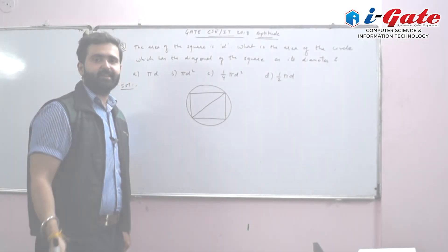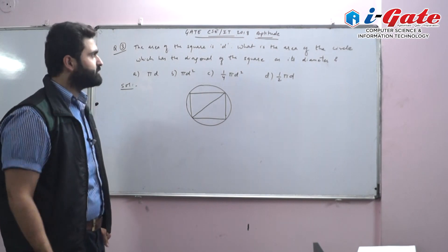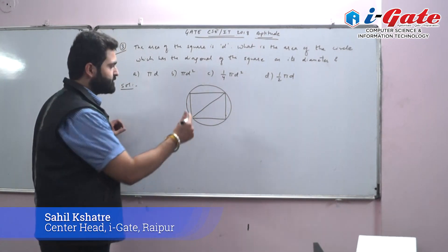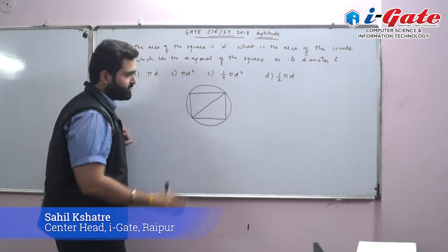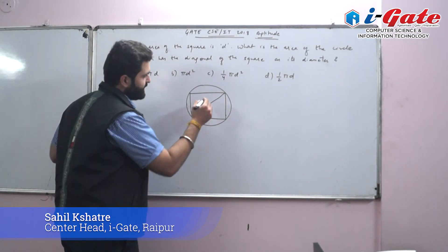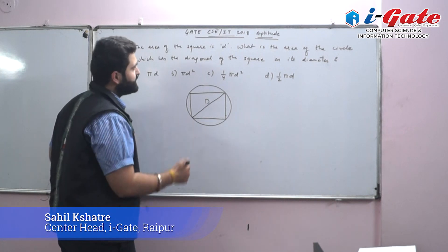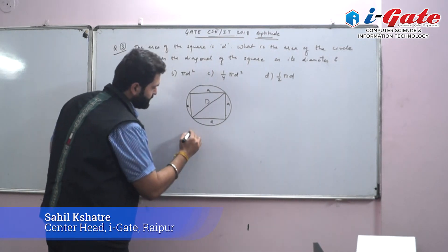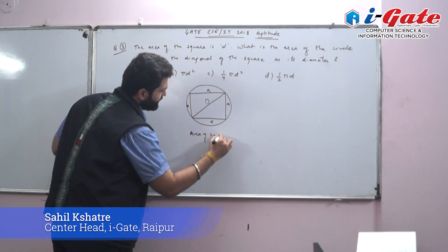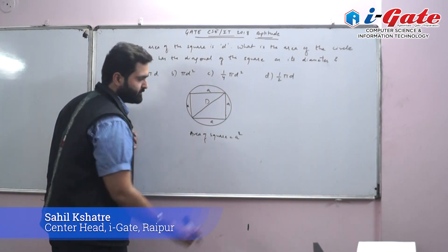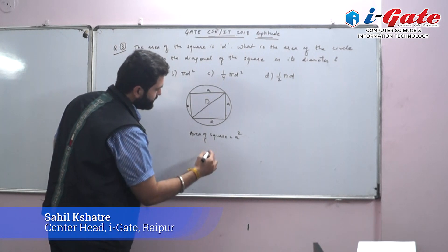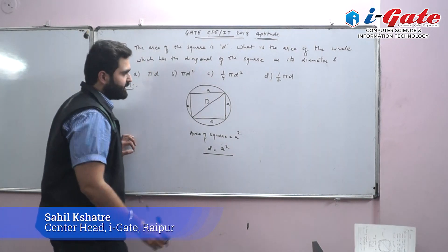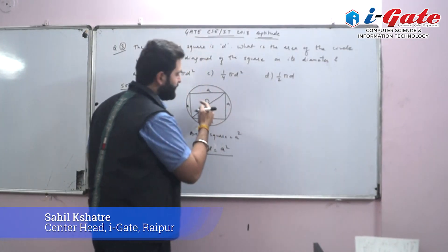Question 3: The area of a square is d units. What is the area of the circle which has the diagonal of the square as its diameter? Let the side of the square be 'a'. Then area of square = a², so a² = d. We need to find the diameter D of the circle.